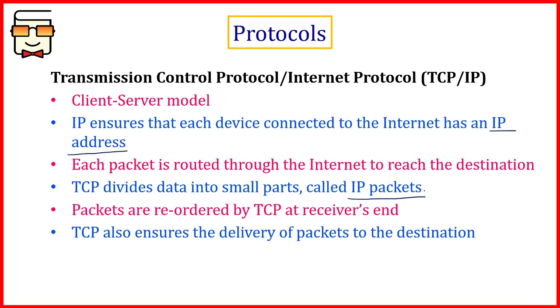TCP makes sure all packets are delivered correctly, without damage or loss. IP governs that every device has an IP address — the address of a device on the internet, just like a home address is needed to reach someone. IP also helps in routing packets, deciding what route packets follow through intermediate routers. TCP handles packet reassembly, ensures safe delivery, and manages the fragmentation of packets.